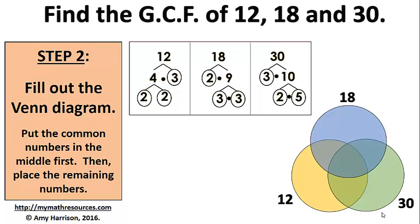Then we look at the prime factorization of 12, 18, and 30 and see what prime factors they have in common. 12, 18, and 30 have a 3 in common, so we can highlight the 3 and put it in the center of the Venn diagram.